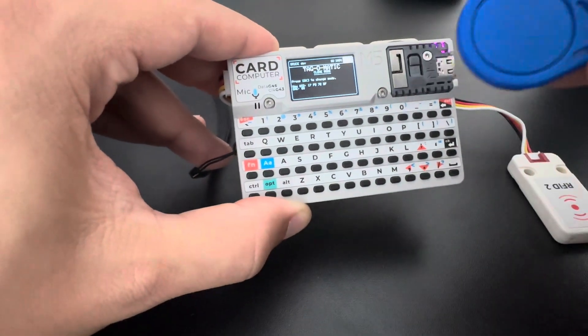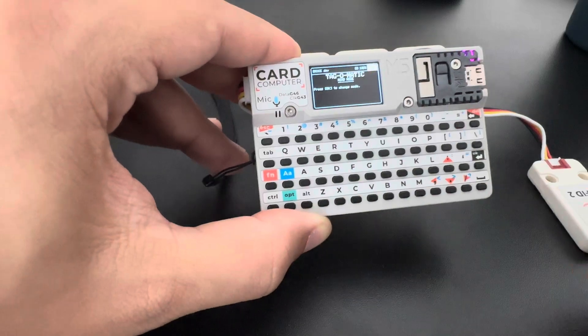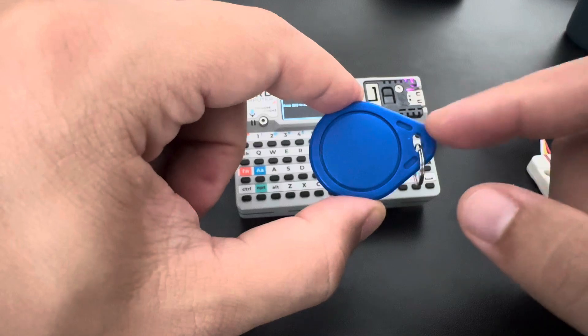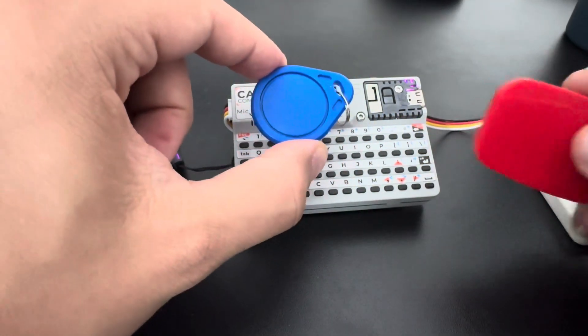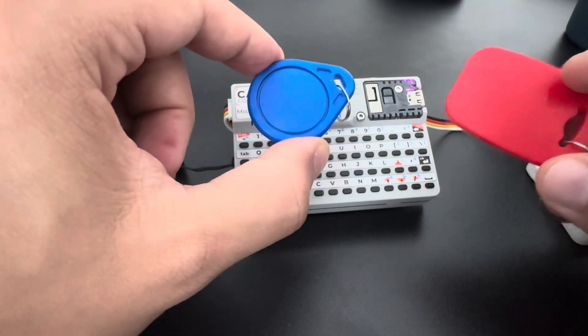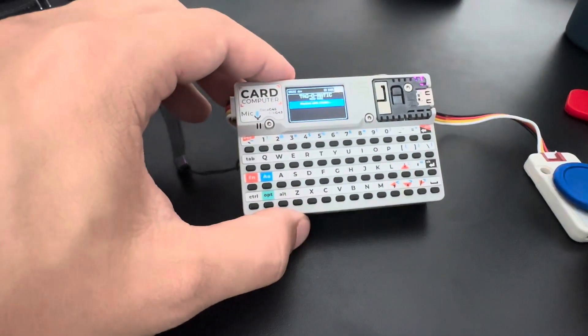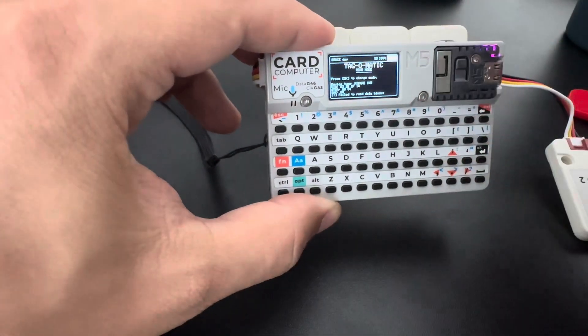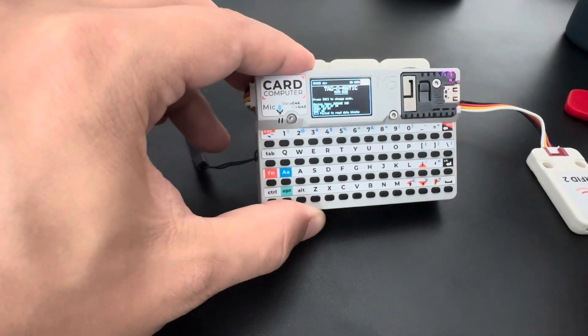So I'm going to try to clone to the blue tag and I get an error. The reason here is because this tag is not clonable. I cannot clone another tag into this one because for this I need to write into block zero. The first block, block zero, is where I have the UID of the tag. So I need to overwrite the UID of this tag to be equal to the other one.